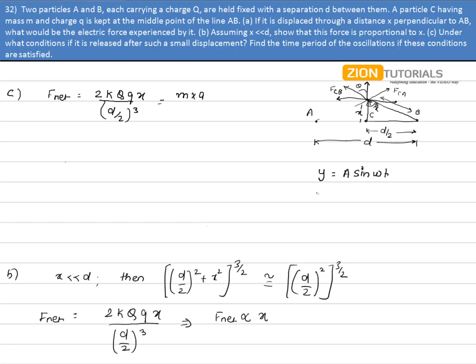And differentiating this equation twice, we get velocity as A omega cos omega t and acceleration as minus A omega square sin omega t. So in case a particle is performing simple harmonic motion, then the acceleration can be easily given by minus omega square x sin omega t.